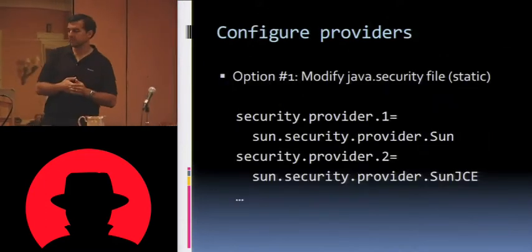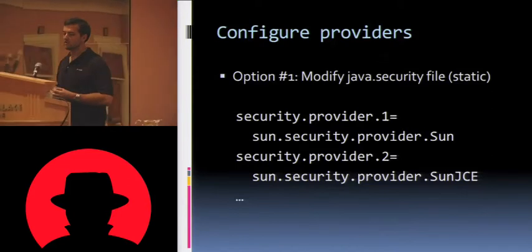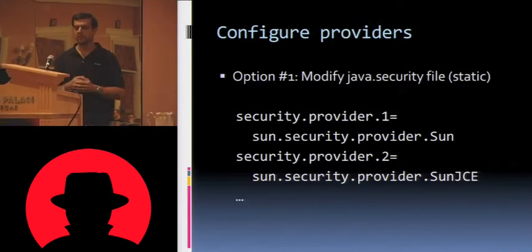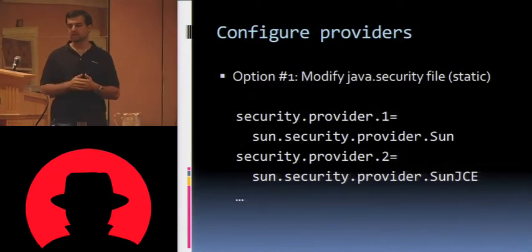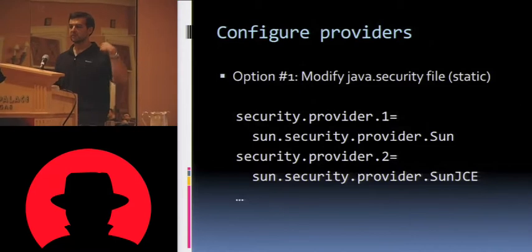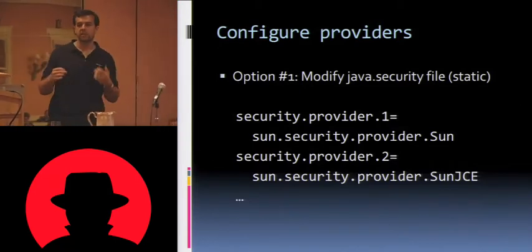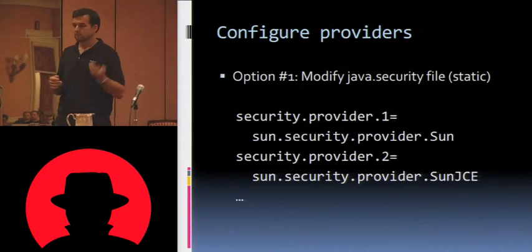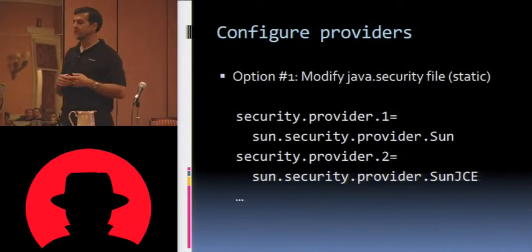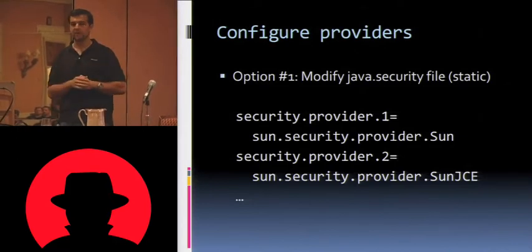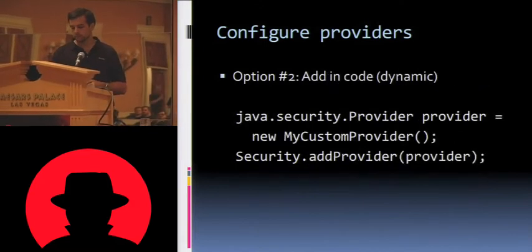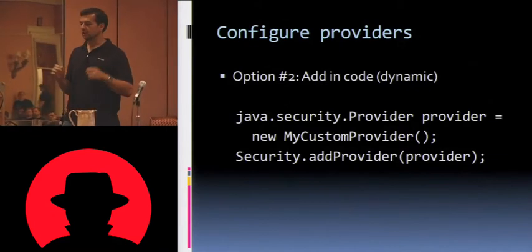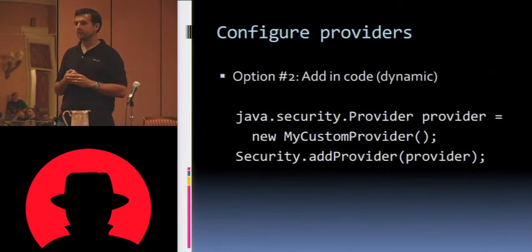So how do you configure the providers? The first option is the easiest, which is to modify the Java security file on the system — this is the static option. If you open up your Java security file, you'll see lines like security.provider.1 equals Sun Security Provider, security.provider.2 equals something else, etc. These are just the classes of the providers in order, with one-based ordinals indicating the order in which they get searched. If you want to change it, just change the ordinals. If you want Sun JCE to be first on the list, make it security.provider.1 — very, very straightforward. Option two is the dynamic option: do it in code. You declare your own custom provider and call Security.addProvider.